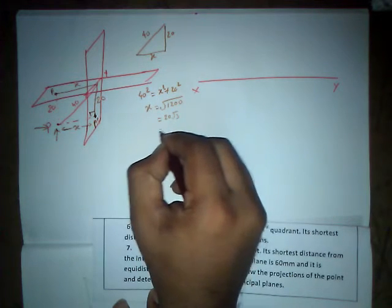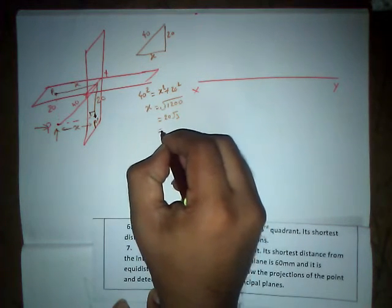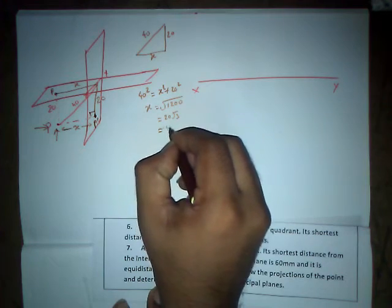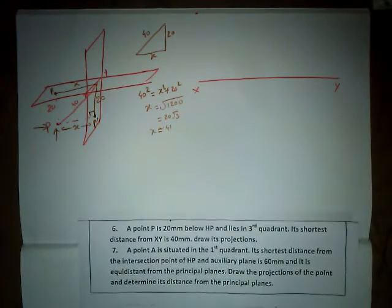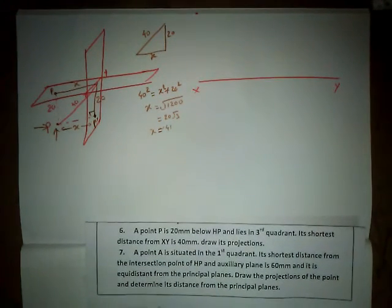So root 3 value is 1.732. So approximately it is going to be 41mm. So I took an approximate value. We got the X value. Now we can draw the direct answer.